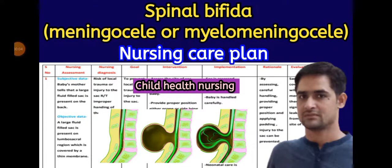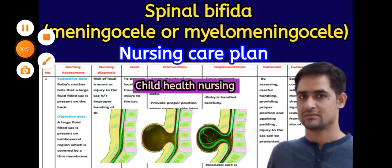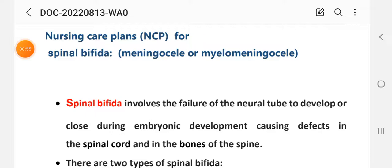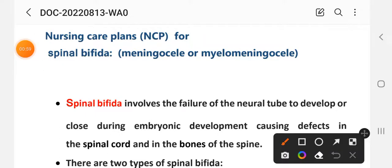Hello friends, welcome to my YouTube channel on nursing failure. Today in this video we learn about the nursing care plan of myelomeningocele or meningocele, which is a type of spina bifida. This is a very important nursing care plan for pediatric nursing examination purposes or practical file purposes. Here is the nursing care plan on spina bifida.